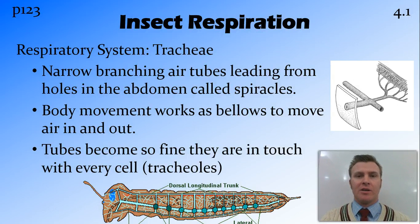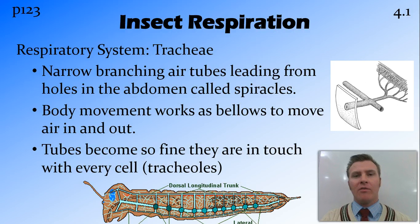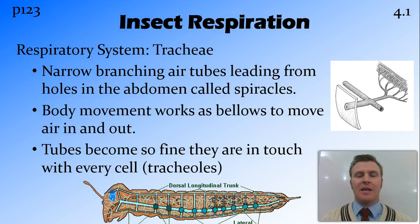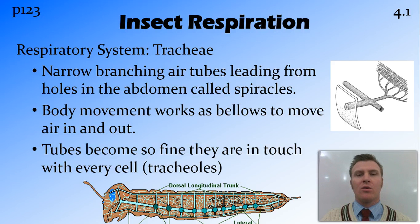Insects have a very different respiration system. Their system consists of tracheae — narrow branching air tubes that lead from holes in the abdomen called spiracles. The pumping of air in and out of these spiracles is done by the movement of the abdomen. Along the side of the abdomen are a series of spiracles connected to the tracheae. These tracheae then branch out and become very fine so that they're in touch with every cell inside the insect, and these very fine tubes are called tracheoles.